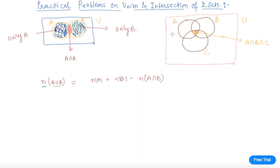This area which is common to all is called A intersection B intersection C. This area is only A, this is only B, this is only C. This area is A intersection C, this area is B intersection C, and this above area is A intersection B.